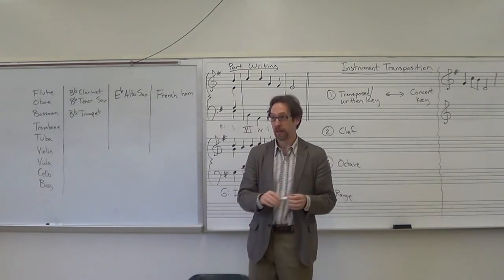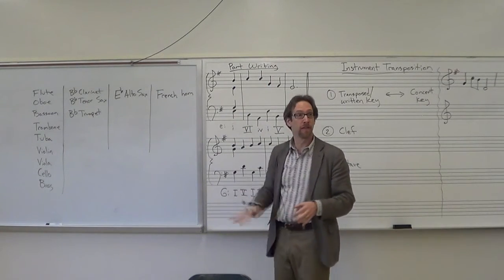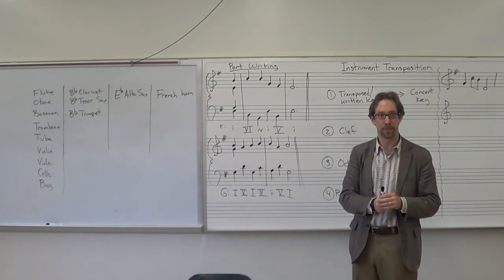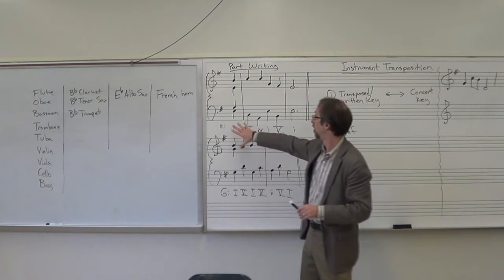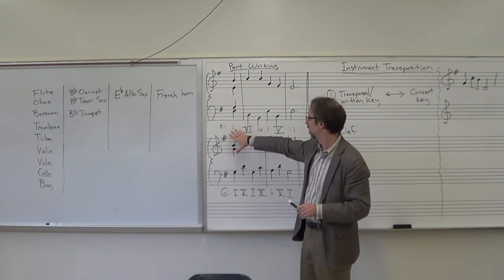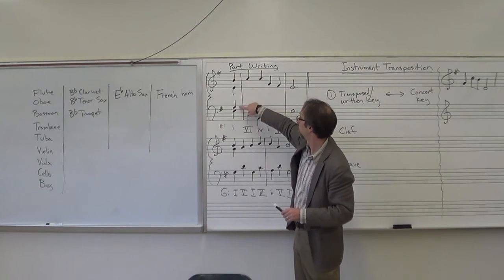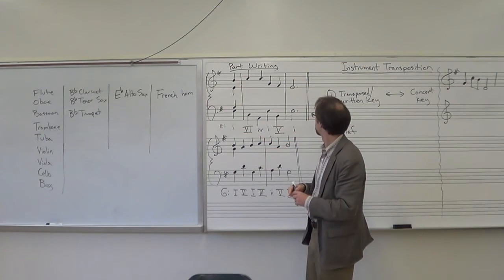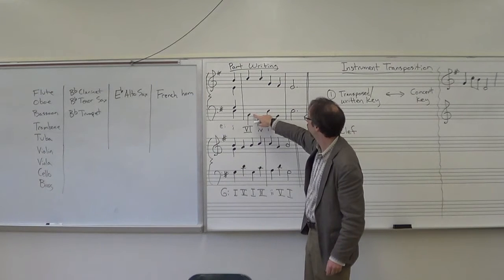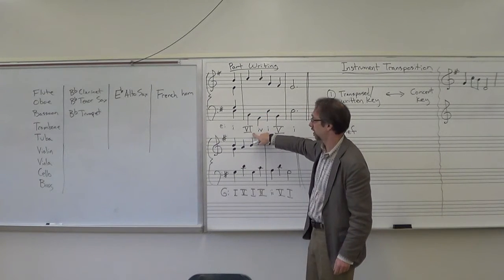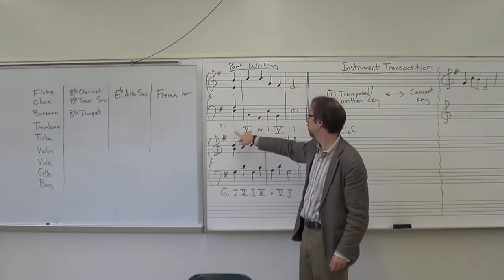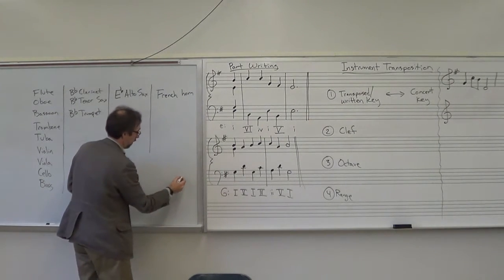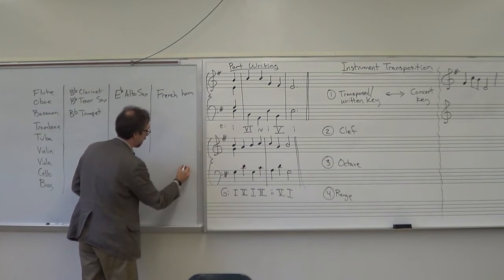What we're going to start with is a review of part writing and the rules that we have been talking about. So, we have here what's given. We're looking for four parts. We have our Roman numeral analysis below. It's asking for a six chord in the key of E minor. The six chord is C, E, G.